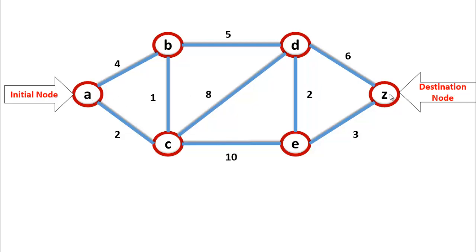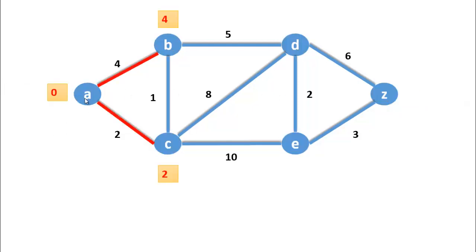Z is the destination node. A is the initial node, that's why its initial value is zero. Now we will find the adjacency nodes from A. Here, A to B is directly connected and A to C is directly connected.